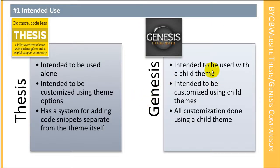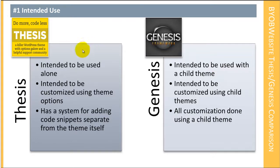Genesis is intended to be used with a child theme. There is no real possibility for customizing Genesis's appearance without using a child theme — all customization is done using the child theme. So the intended use is not really to use Genesis as is; Genesis is intended to be used with a child theme added to it, while Thesis is intended to be used as is, with a system for adding code snippets for minor modifications.